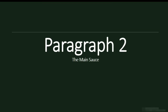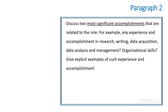Now let's talk about paragraph two, which I call the main source of your letter. In paragraph two, you want to start discussing your significant achievements. Remember, we mentioned in an earlier lecture that you should write three to four significant accomplishments down on paper — now is the time to discuss them. These accomplishments should be related to academics: for example, do you have any experience in research writing, collecting data, data analysis, or data management? Some people don't even know that is a skill in itself.